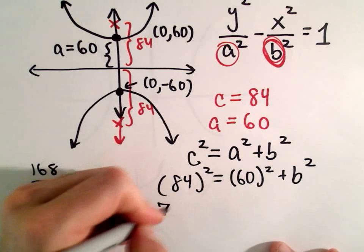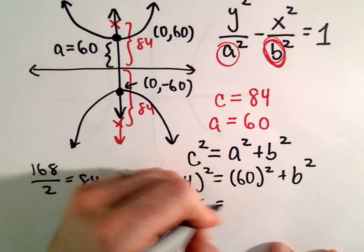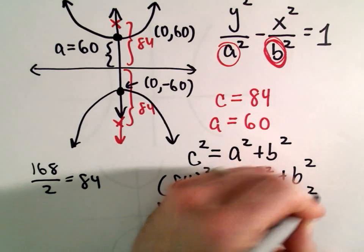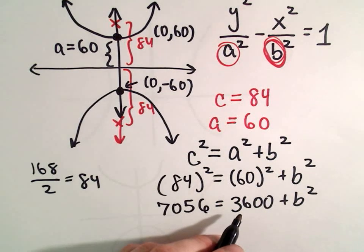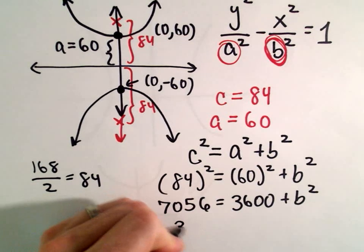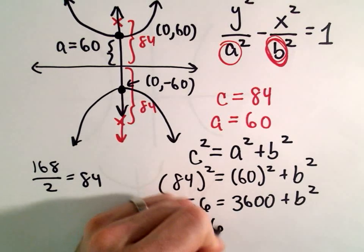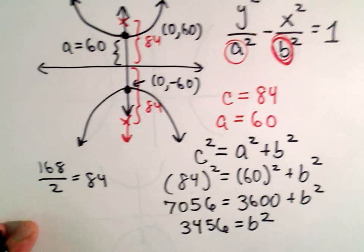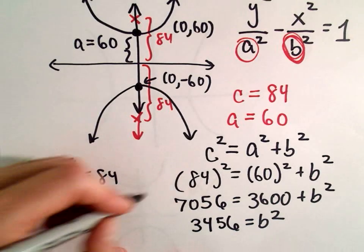84 squared is 7056. 60 squared is 3600. If we subtract 3600 from both sides, that'll leave us with 3456. And hey, now we've got our value for b squared. So really, we've got everything we need for our equation.